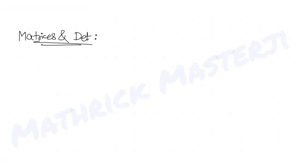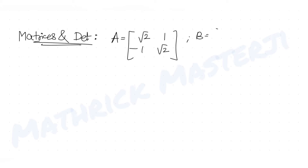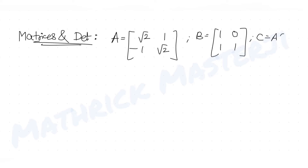The question tells us: A is a matrix with entries root 2, 1, minus 1, root 2. Matrix B is given as 1, 0, 1, 1.